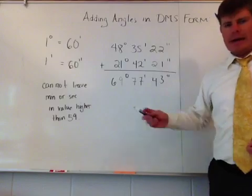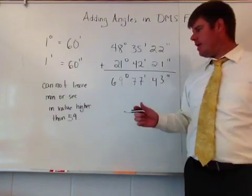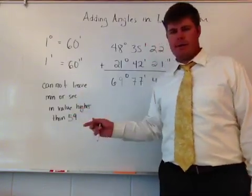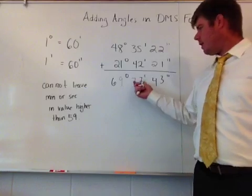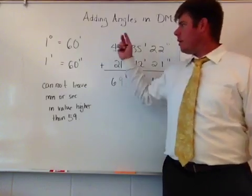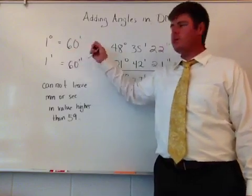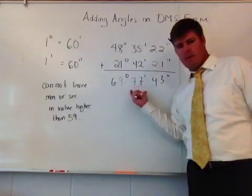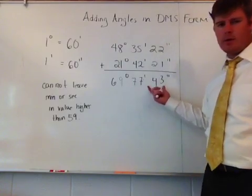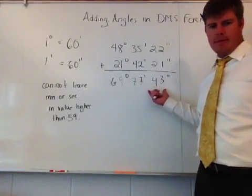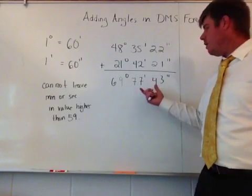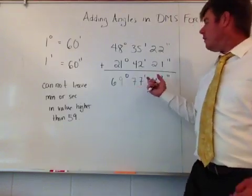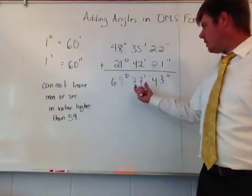Now we have to come back and evaluate this. Remember you cannot leave it higher than 59. We're going to come back to the fact that one degree equals 60 minutes. The reason I'm going to come back to that is because my minute value is the one that fails. The seconds meet all the criteria, but this one doesn't.